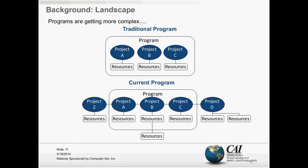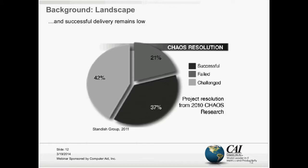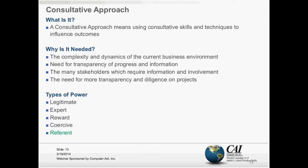While programs are getting more complex, delivery continues to remain low. The Chaos Report from the Standish Group is a standard metric on the productivity of projects, and you can see we're still at about a third that are successful. Programs are getting much more complex, yet successful delivery remains low. That's the business case for why we need to have a more consultative approach.